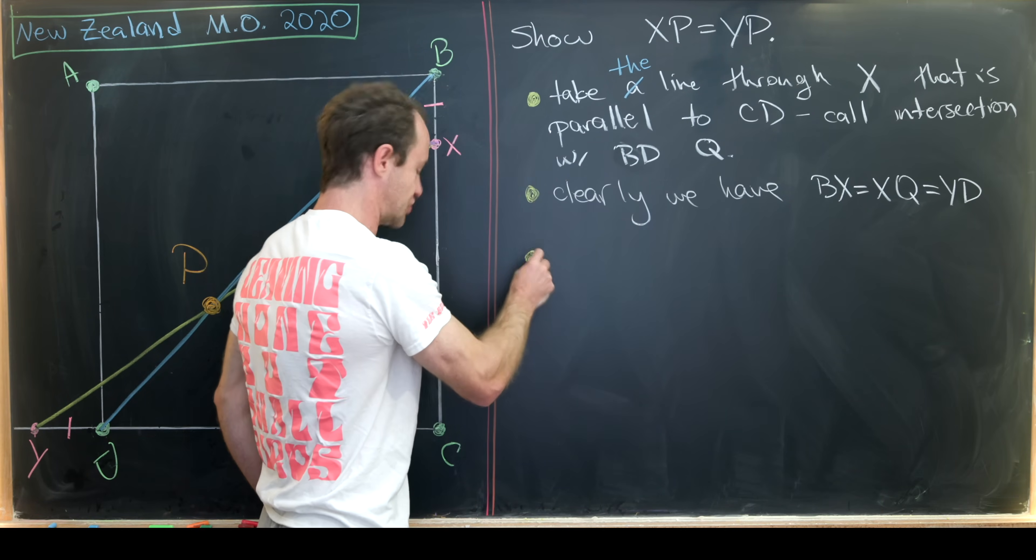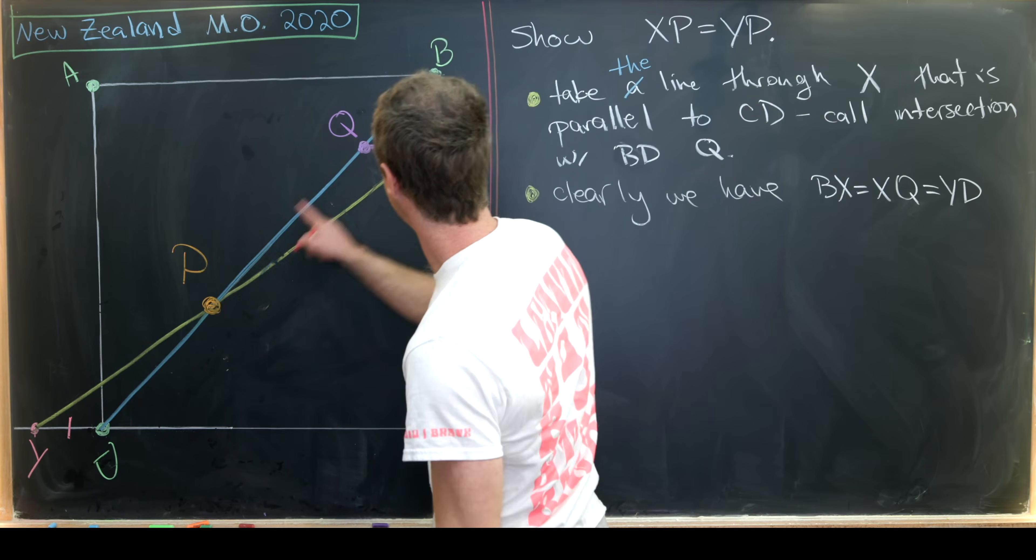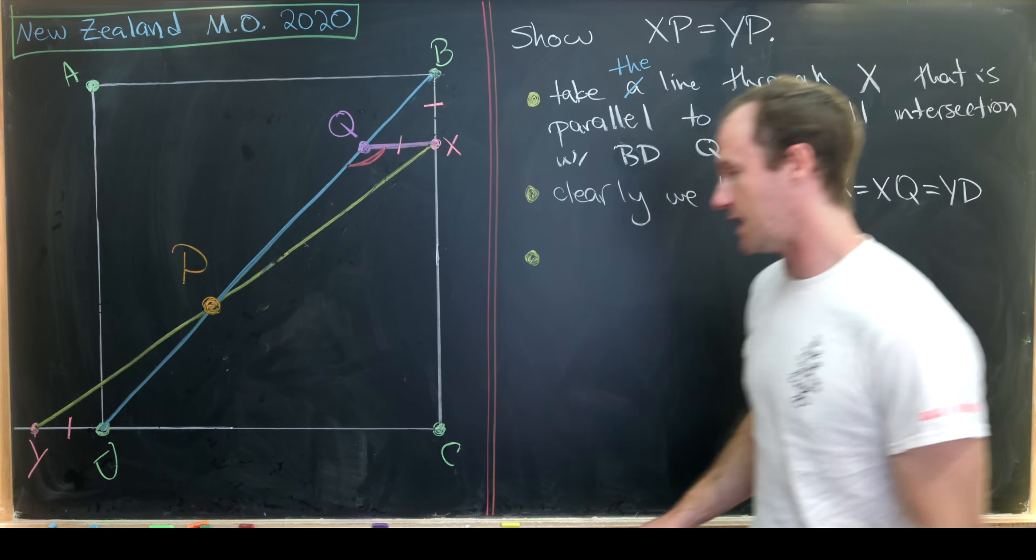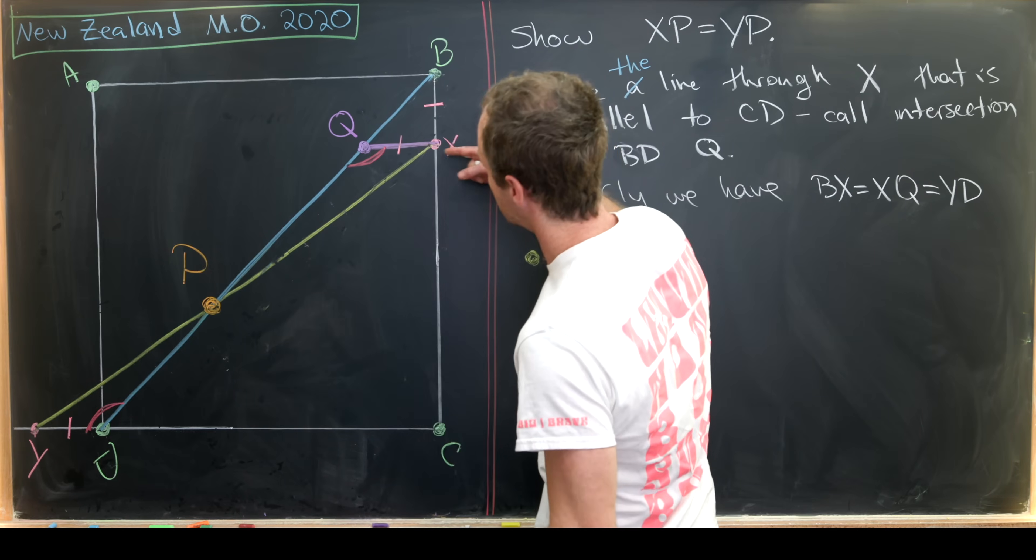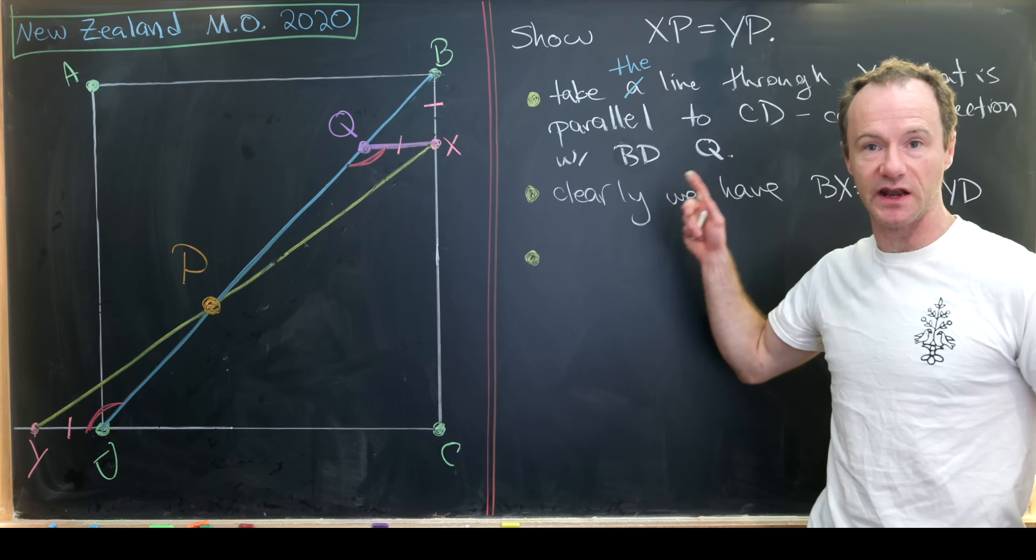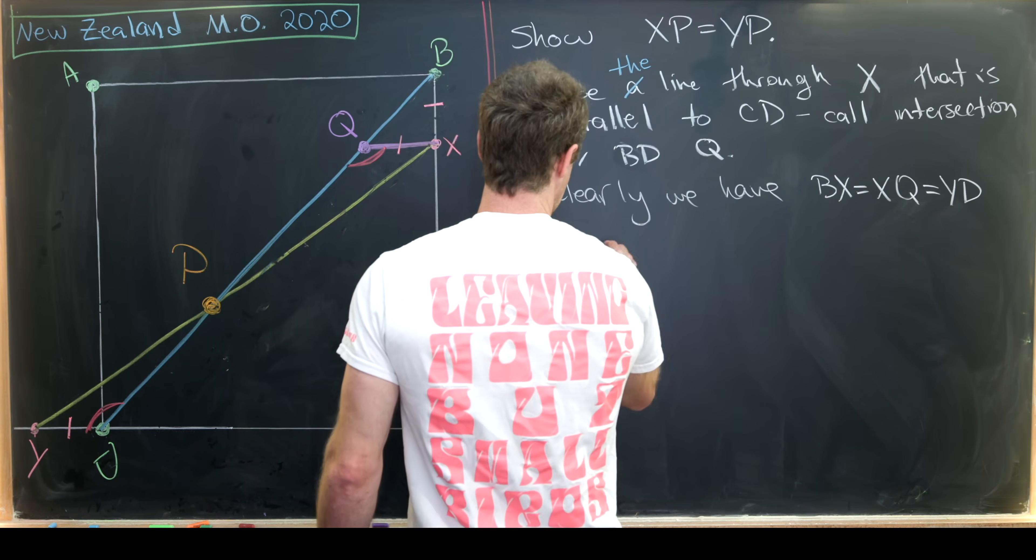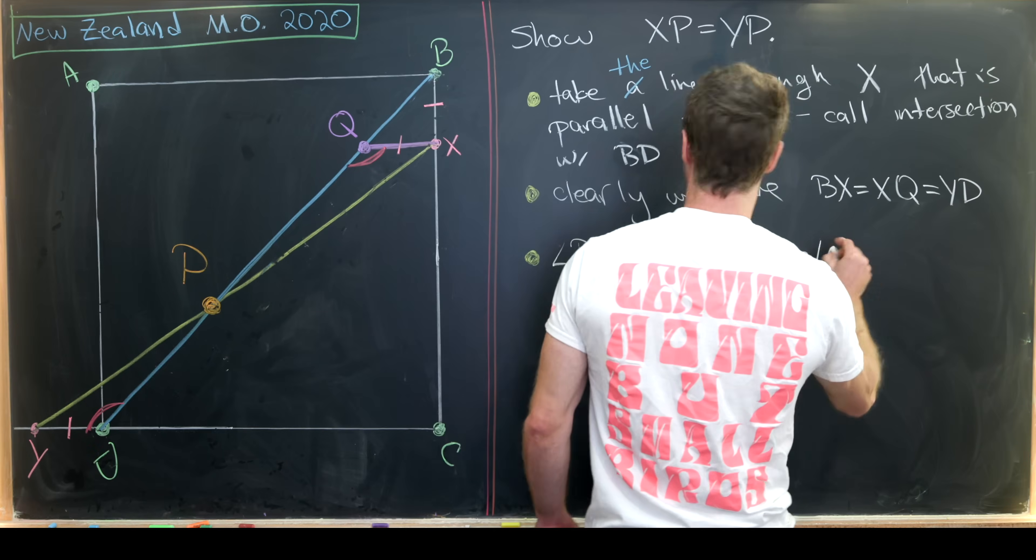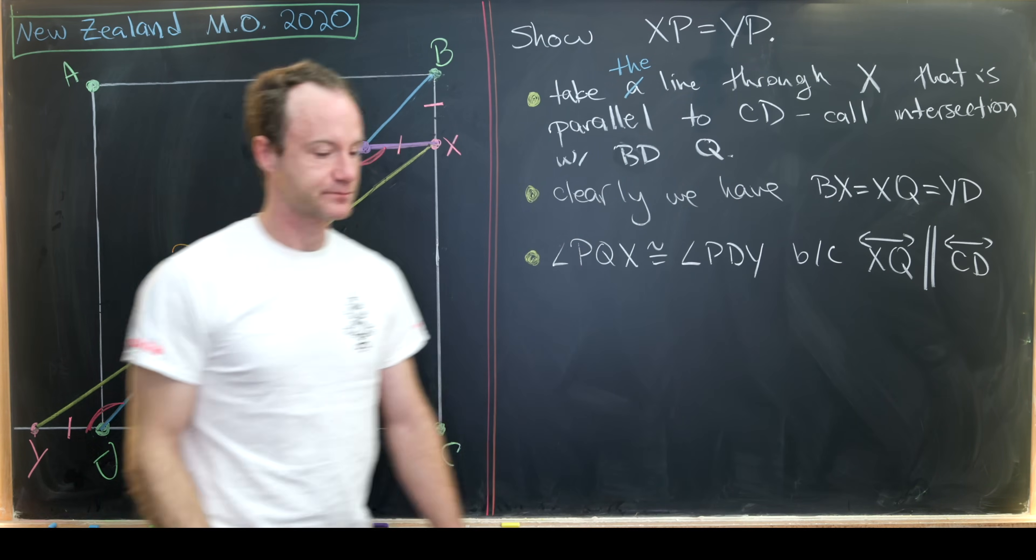Then next, we're going to do a little bit of angle chasing. So let's start with this. We have angle PQX is congruent to angle PDY. And why is that? Well, that's because XQ is parallel to CD. And this line segment DQ is cutting across those two parallel lines. So angle PQX is congruent to angle PDY because line XQ is parallel to line CD.